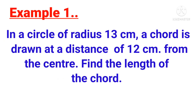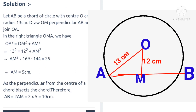Now let's take a question based on these properties. In a circle of radius 13 centimeters, a chord is drawn at a distance of 12 centimeters from the center. Find the length of the chord. The radius is given and the distance of the chord from the center is given. Let AB be a chord of a circle with center O and radius 13 cm, draw a perpendicular OM on AB, and join OA. OA is the radius.